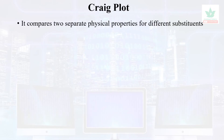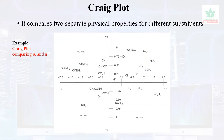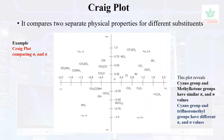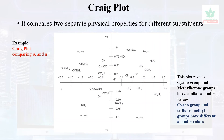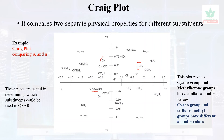The next topic is the Craig plot, which compares two separate physical properties of different substituents. It is an X-Y axis plot. For example, taking the Hansch pi constant and the Hammett sigma constant as the two axes: the cyano group and methyl ketone group have similar pi and sigma values, whereas the cyano group and trifluoromethyl group have different pi and sigma values. This plot is useful in determining which substituents could be used in a QSAR study.